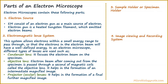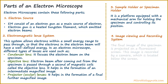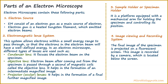The next part of an electron microscope is the sample holder or specimen holder. It is a platform equipped with a mechanical arm for holding the specimen and controlling its position. The last part is the image viewing and recording system. The final image of the specimen is projected on a fluorescent screen, and this image is recorded by a camera located below the screen.